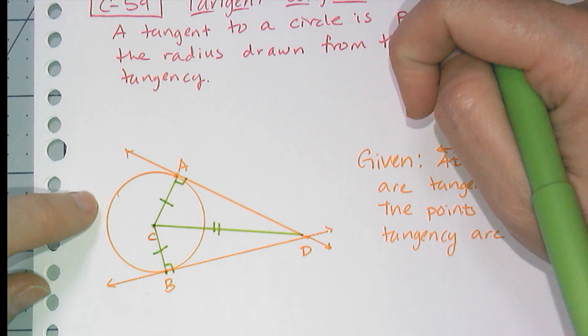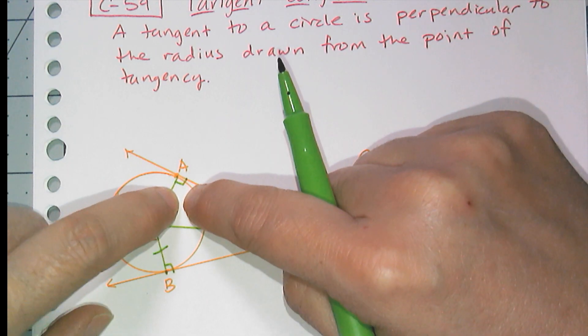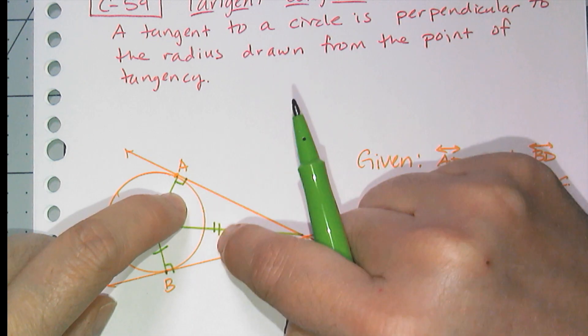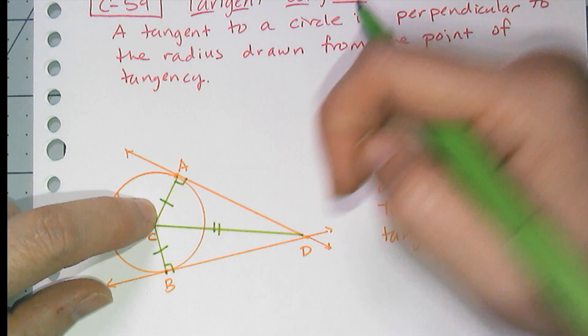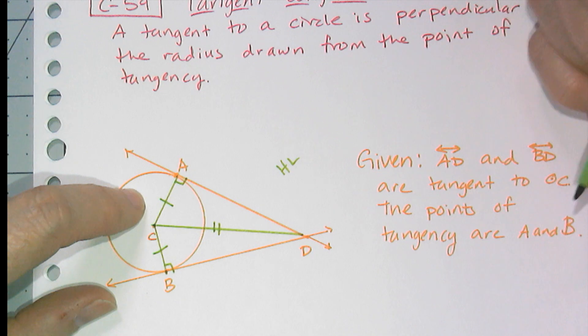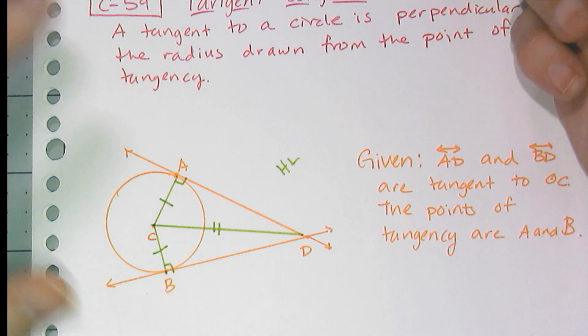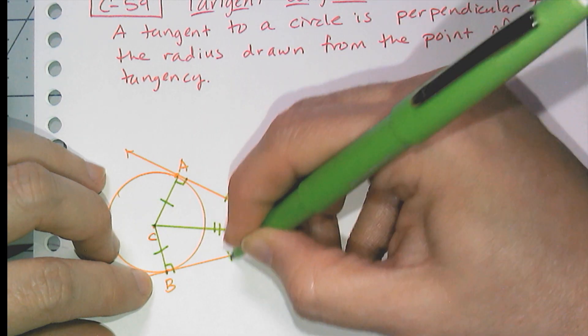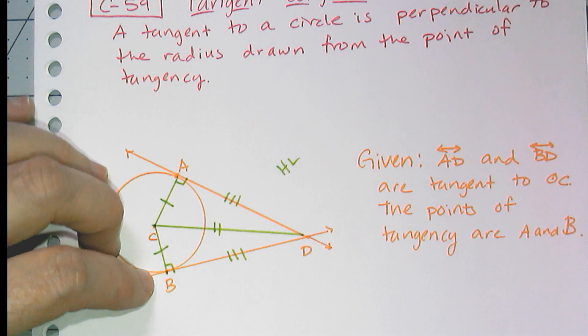Angle side side is not a conjecture of congruency unless the angle happens to be a right angle. Which means this right angle side opposite is hypotenuse. Side making up the angle is a leg. So by hypotenuse leg, I have two congruent triangles, ACD and BCD. And therefore, line segment AD has to be congruent to line segment BD by congruent parts of congruent triangles being congruent.